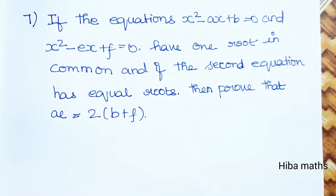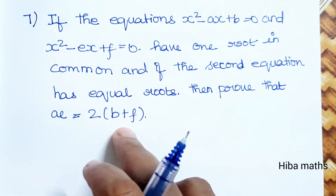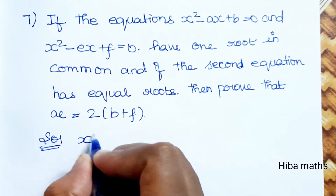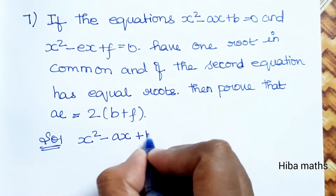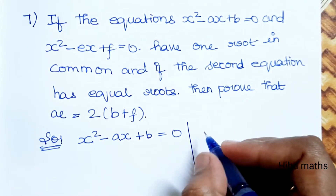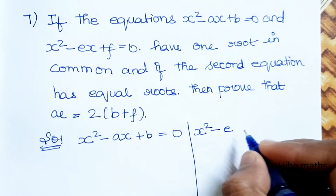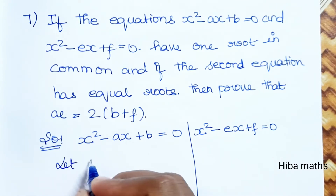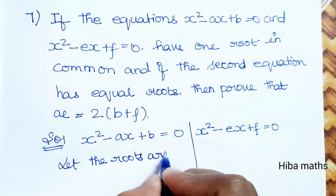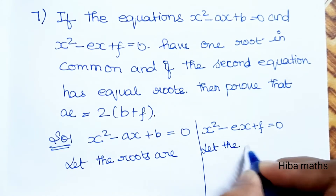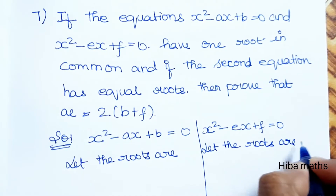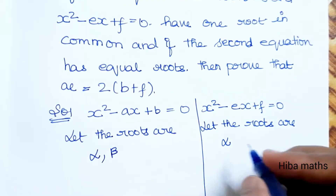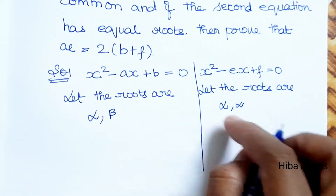Both equations have one common root. Let the roots of the first equation be alpha and beta, and since the second equation has equal roots, its roots are both alpha, alpha. We add sum and product then substitute for the proof.